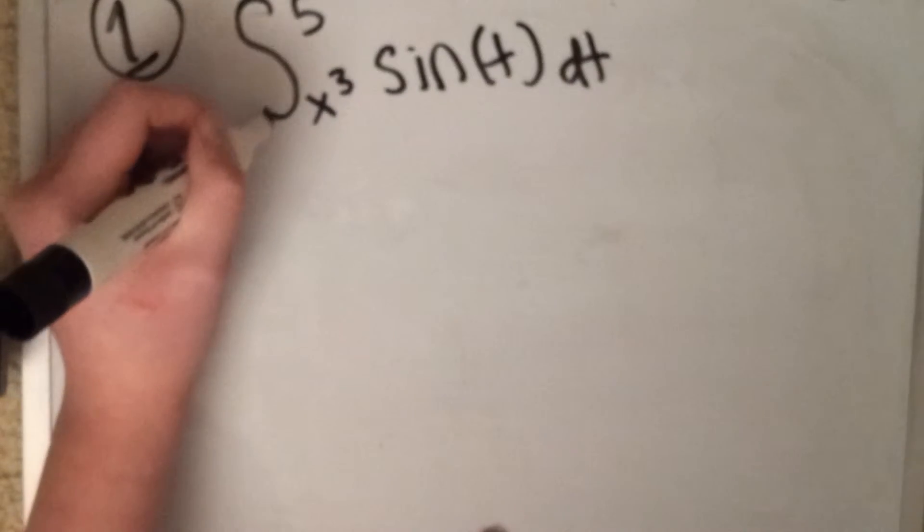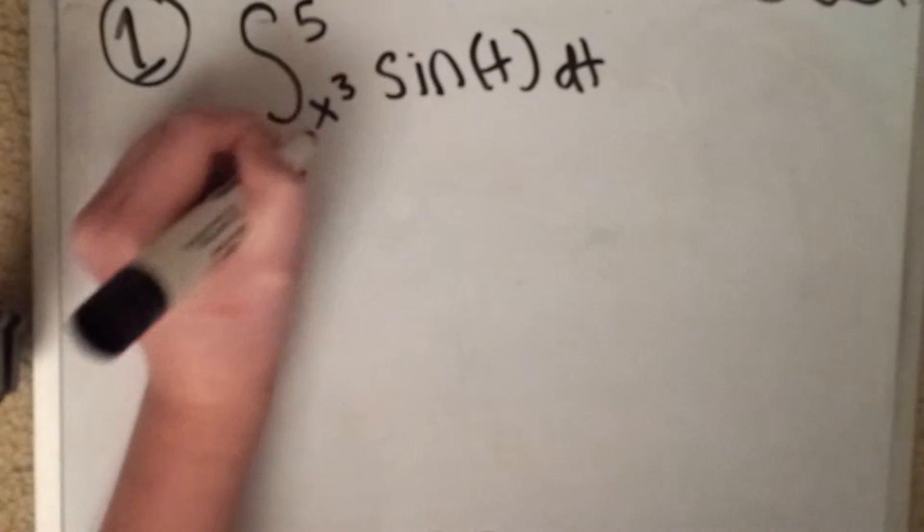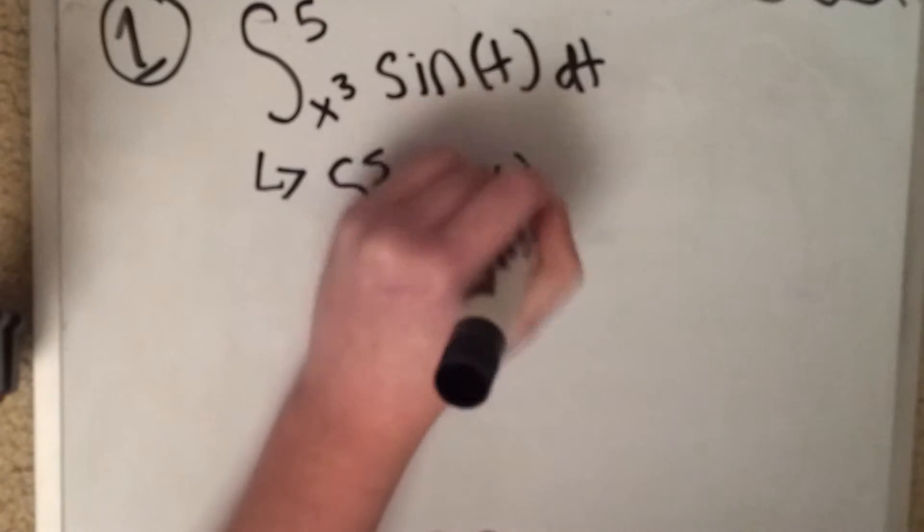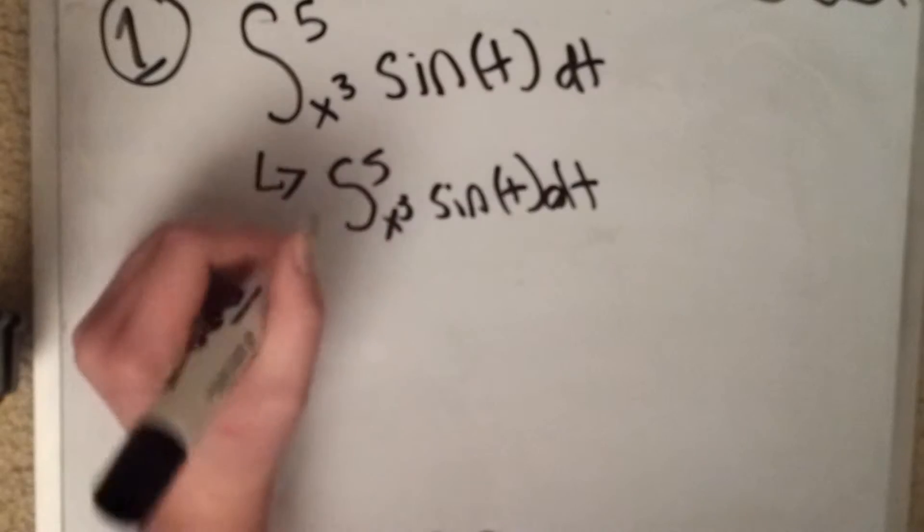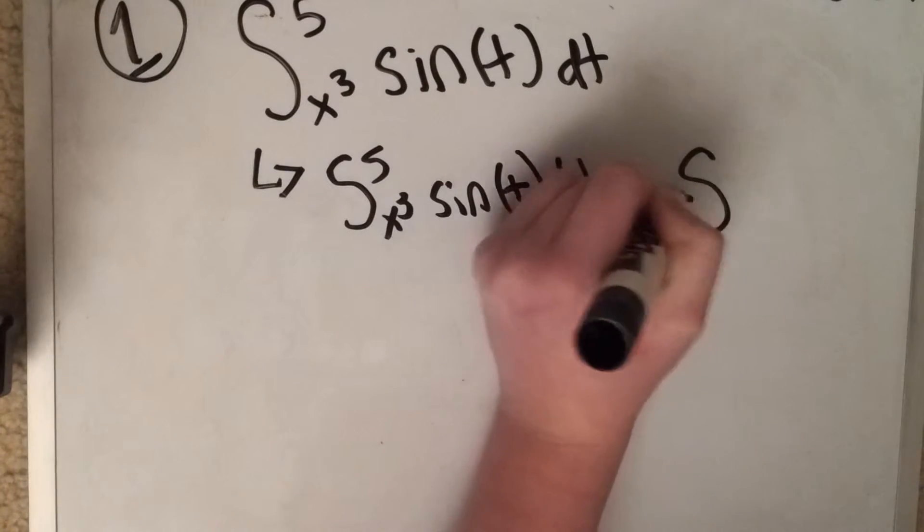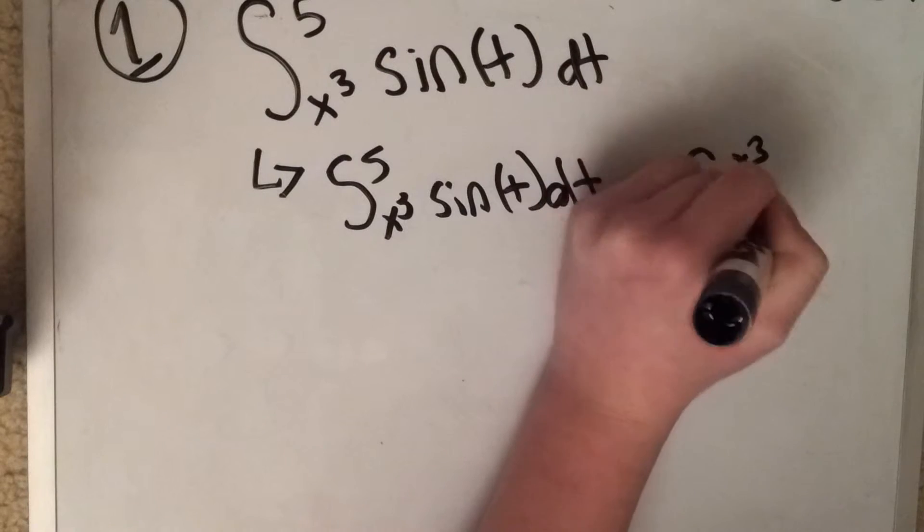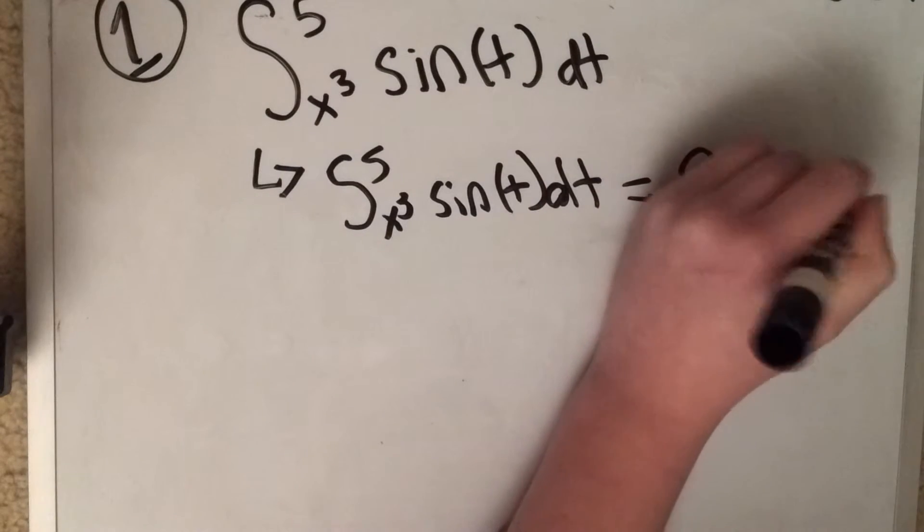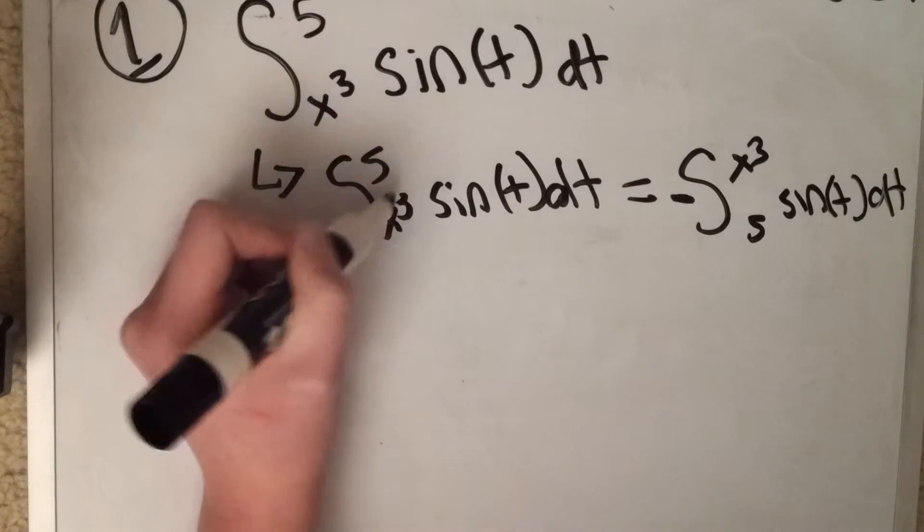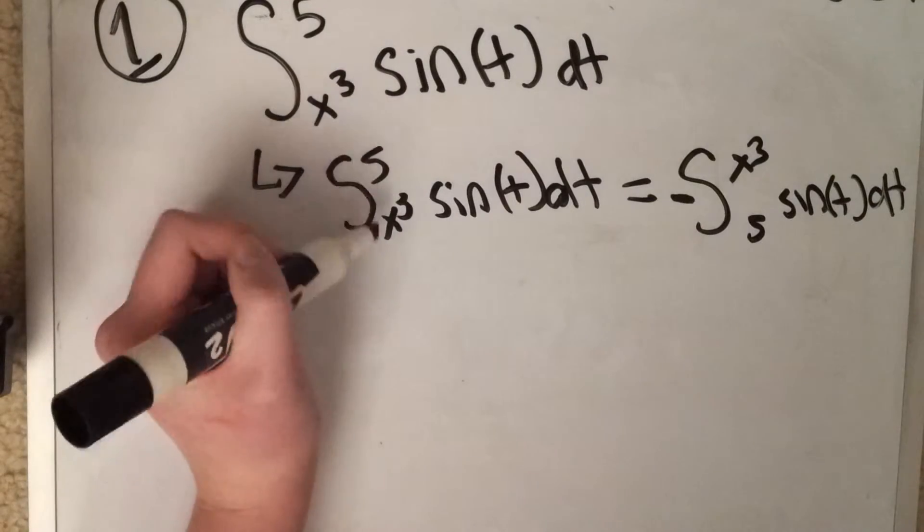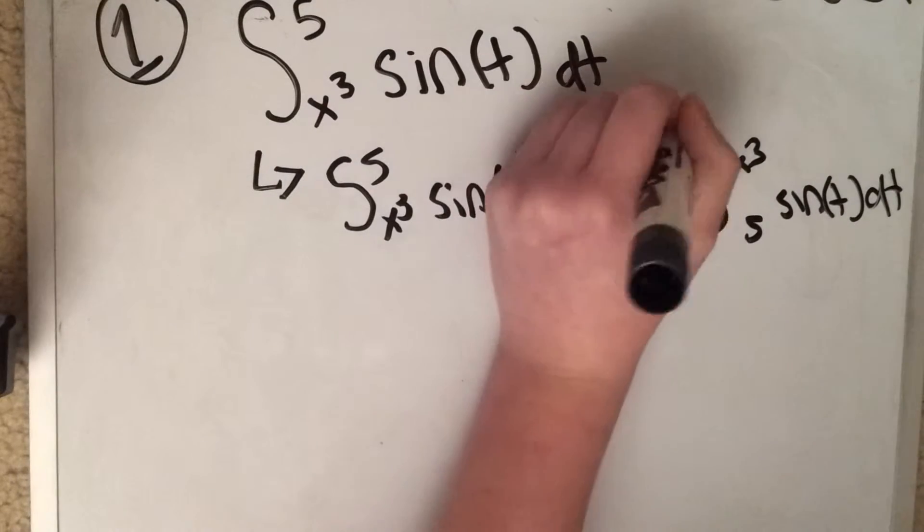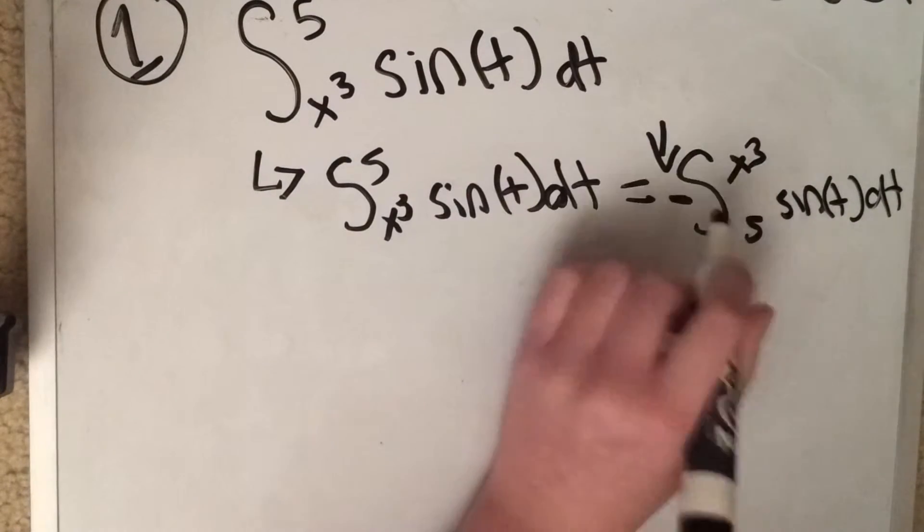So integrals have a special property, right? So we can make this equal to this, the opposite, as long as we have a negative out front. So these two are equal. So if the x is on the lower one and the constant is on the upper, just flip them, but remember to add your negative. This is a common mistake, forgetting the negative when you flip them.